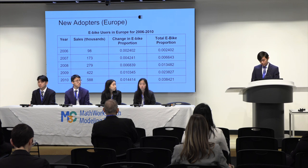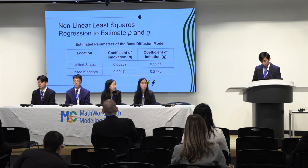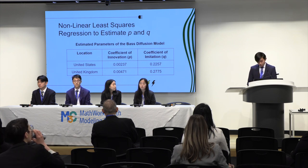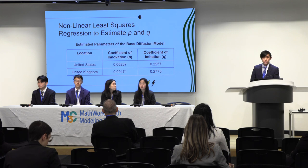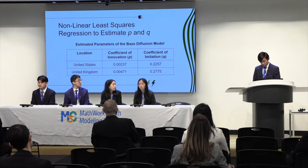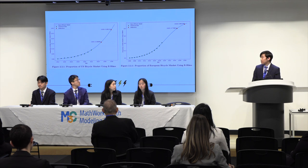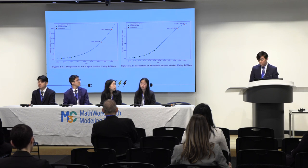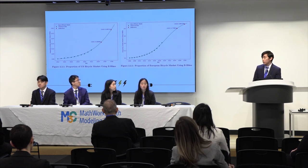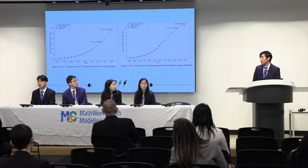We then conducted a least squares regression to estimate the values of P and Q for each region. This resulted in the P and Q values shown here. The values here are technically for the US and Europe, but we use the Europe coefficients to make predictions about the UK. The paths of growth predicted by the Bass Diffusion Model fit very closely with our historical data. Even though the data point at 2020 deviates a little bit, likely due to the pandemic, the difference is negligible when we take the sum over all of the years.